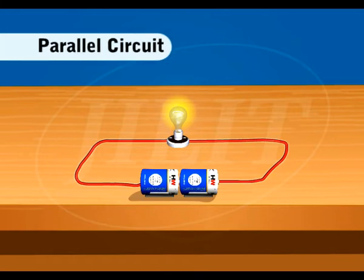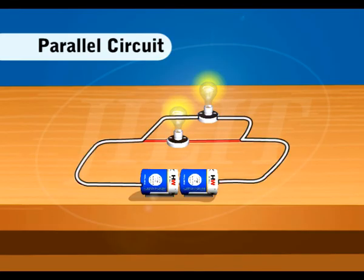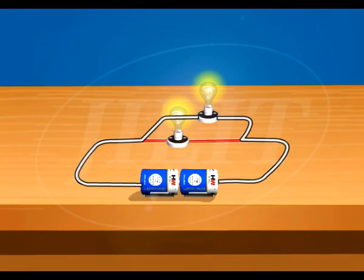In a parallel circuit, all bulbs are connected in two or more branches and each branch represents an individual circuit.